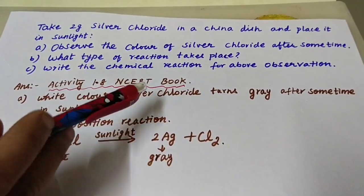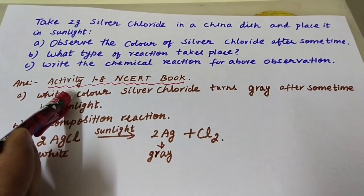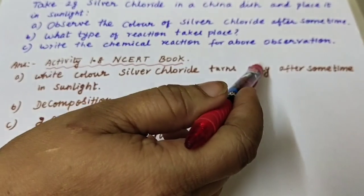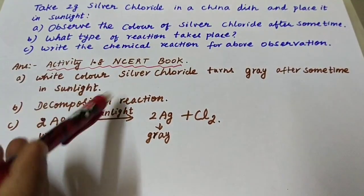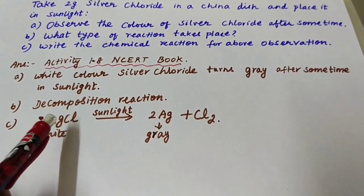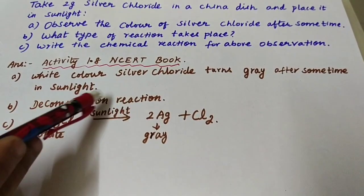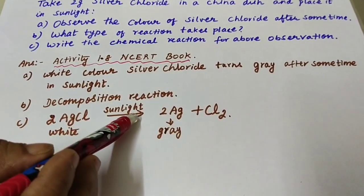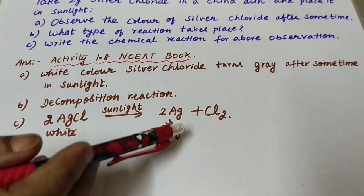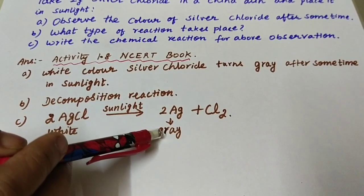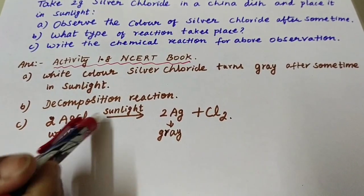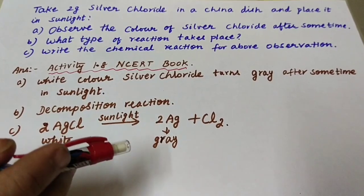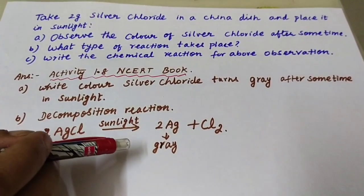Silver chloride (AgCl) is white in color at the beginning. When placed in sunlight, it turns gray after some time. Since only one substance (silver chloride) is taken as reactant, it is a decomposition reaction. The chemical equation: 2AgCl → (sunlight) → 2Ag + Cl₂. The gray color is due to silver, which is gray in color. All activities in your NCERT book must be read and understood, as questions will definitely come from them.